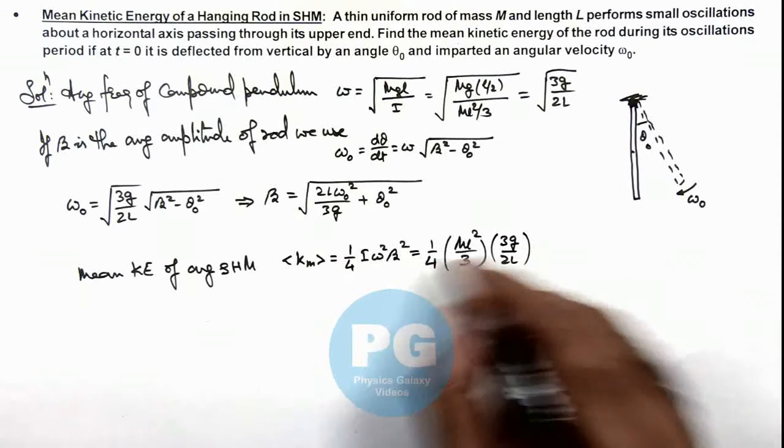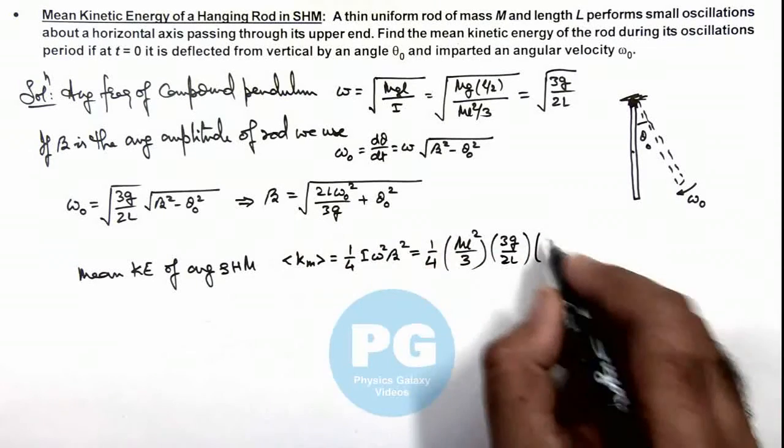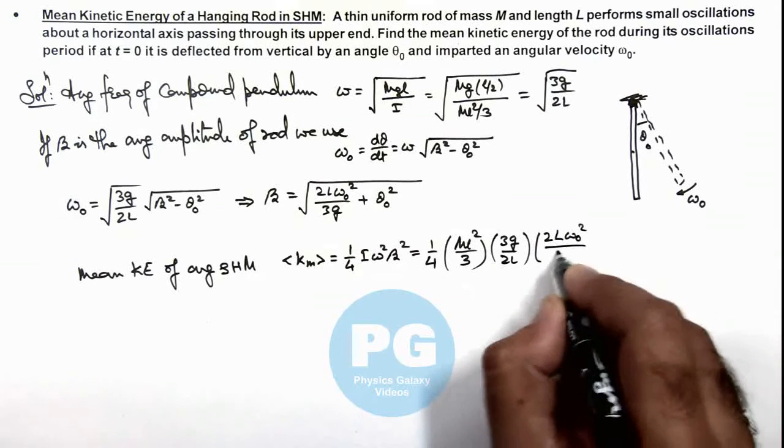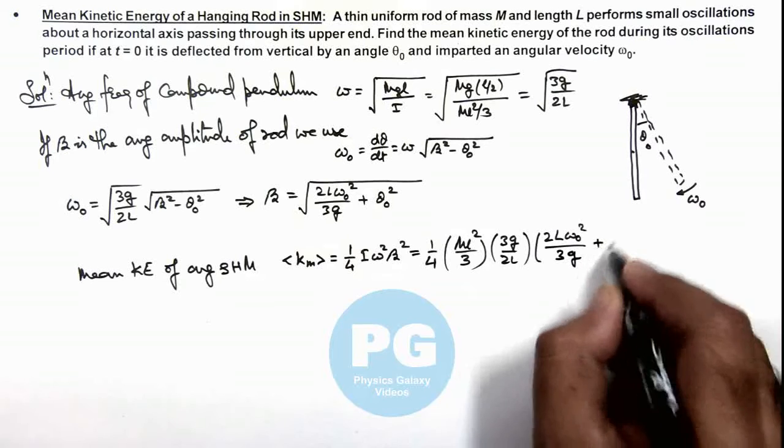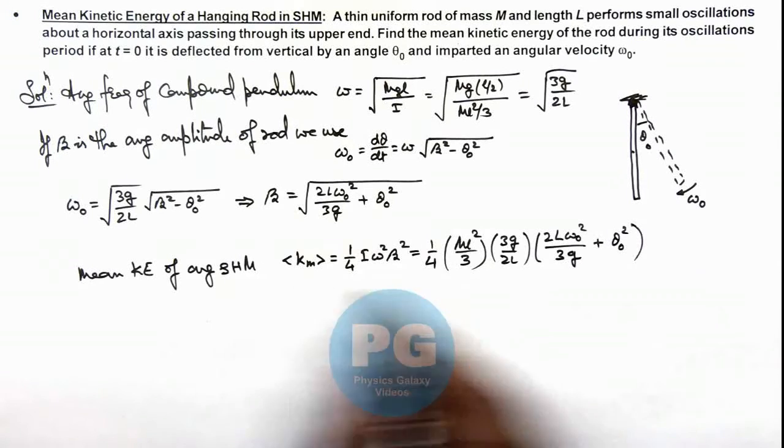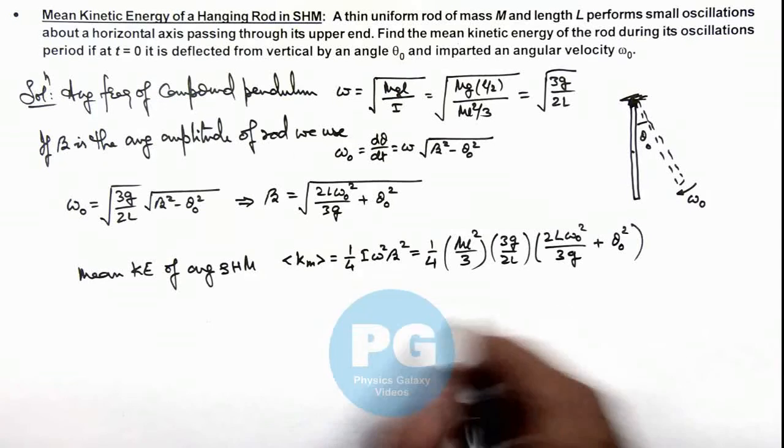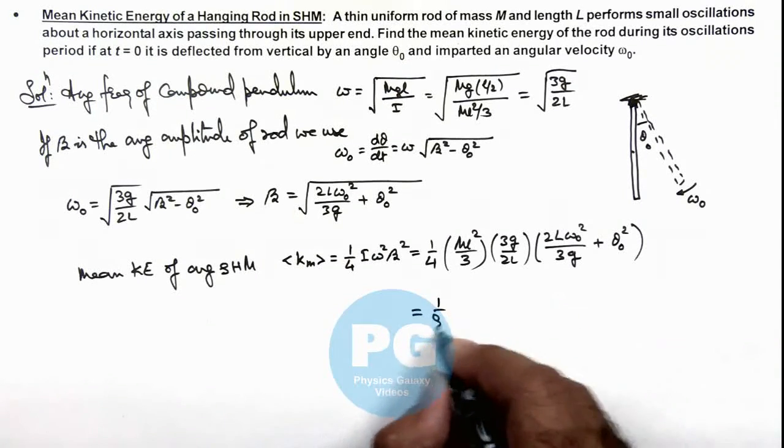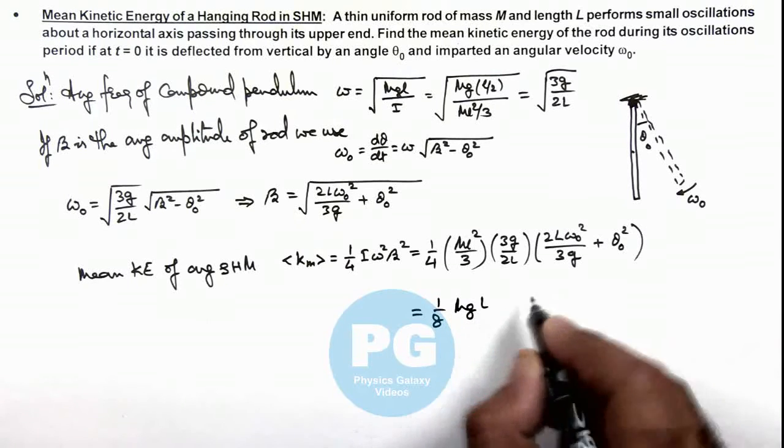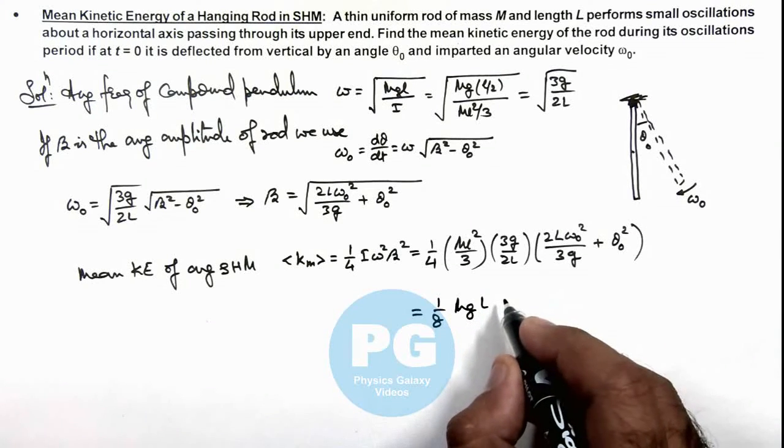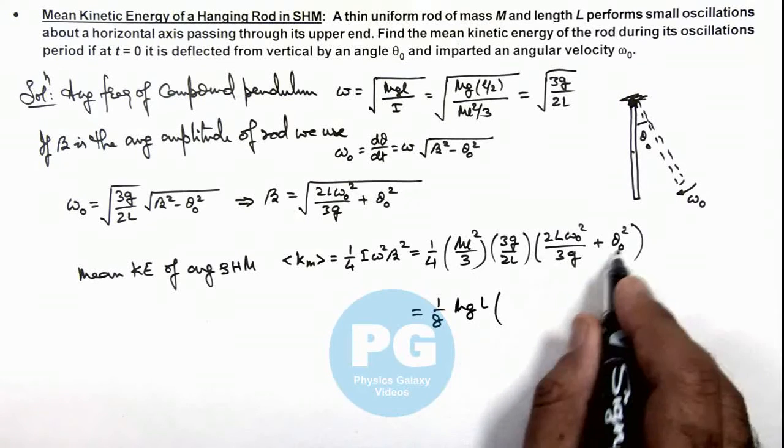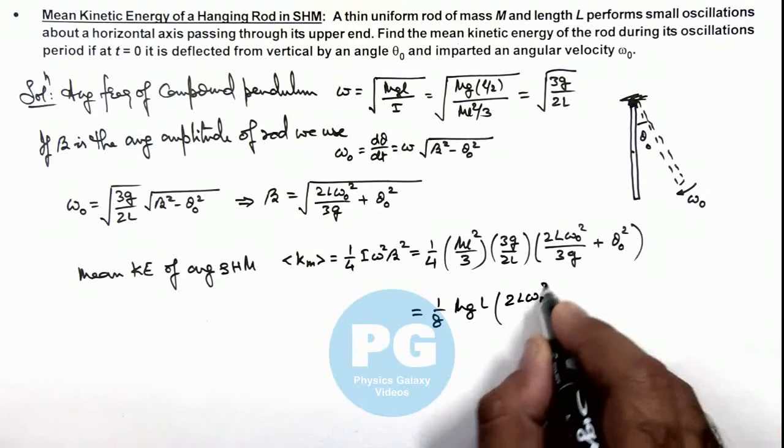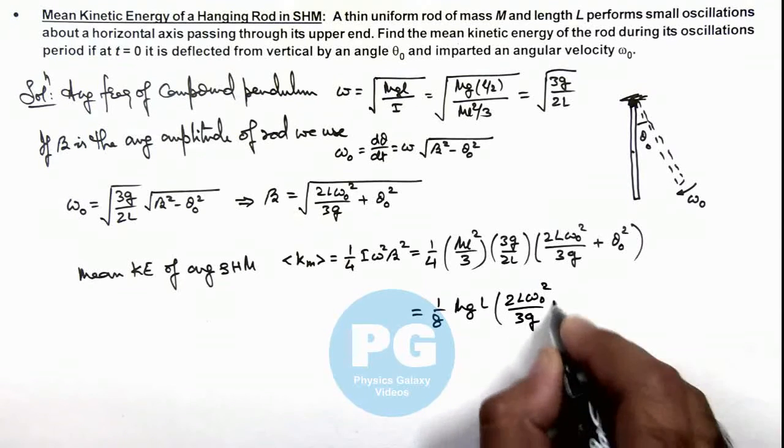And beta we already calculated, so it is 2L omega not squared by 3g plus theta not squared. And from here the value after simplification we are getting is one by eight MgL multiplied by 2L omega not squared by 3g plus theta not squared. That will be the final result of this problem.